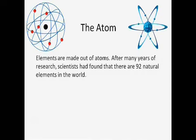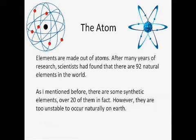Elements are made out of atoms. After many years of research, scientists have found that there are 92 natural elements in the world. As I mentioned before, there are some synthetic elements. Over 20 of them, in fact. However, they are too unstable to occur naturally on Earth.